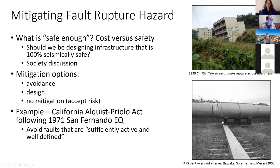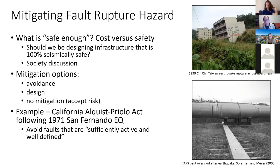A third option is to decide that safe enough would result in no mitigation at all — that we're just going to accept the risk. As Chris Madugo mentioned, part of decisions is to look at what the consequences of failure are. If we're out in the middle of a desert and the worst thing that can happen is a telephone pole falls over, we can accept that loss and accept the economic risk that we'll have to go replace that telephone pole after an earthquake.